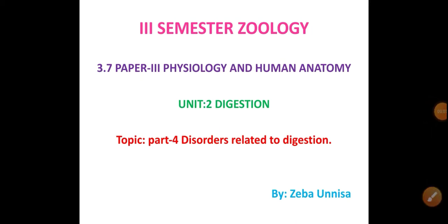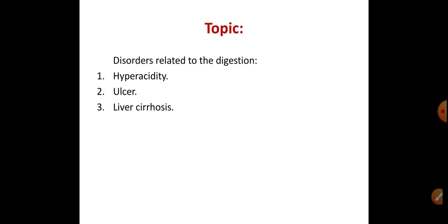Welcome to online classes. Today we start with Part 4 of digestion, which is Paper 3 — Physiology and Human Anatomy — under third semester zoology. We will cover disorders related to digestion. You have previously studied what digestion is, how it takes place, and how absorption occurs. If there is a deviation from the normal process, diseases or disorders occur. There are four disorders in your syllabus: hyperacidity, ulcer, liver cirrhosis, and hepatitis.